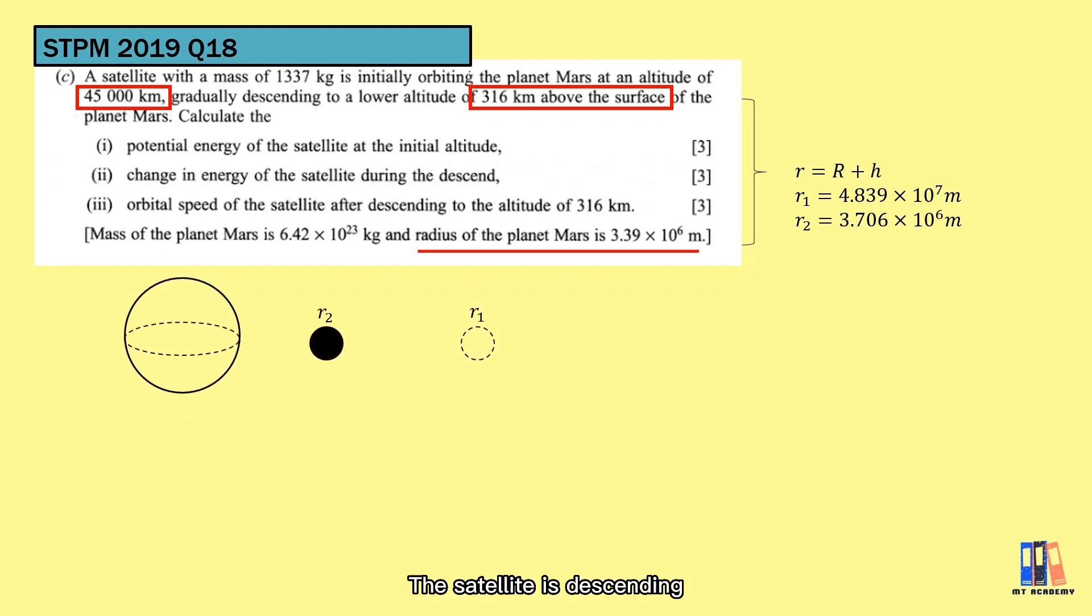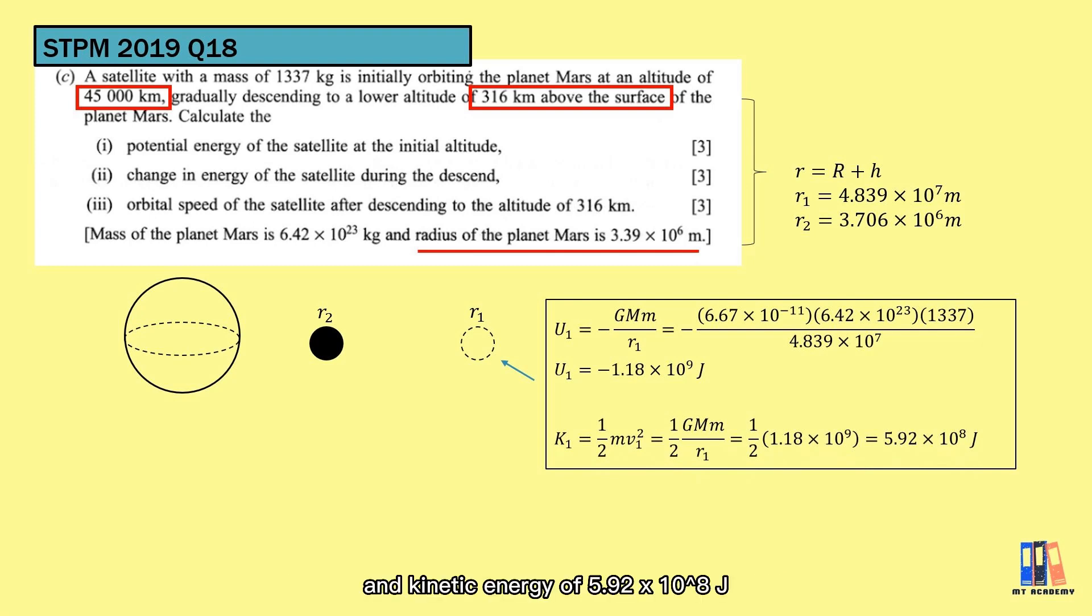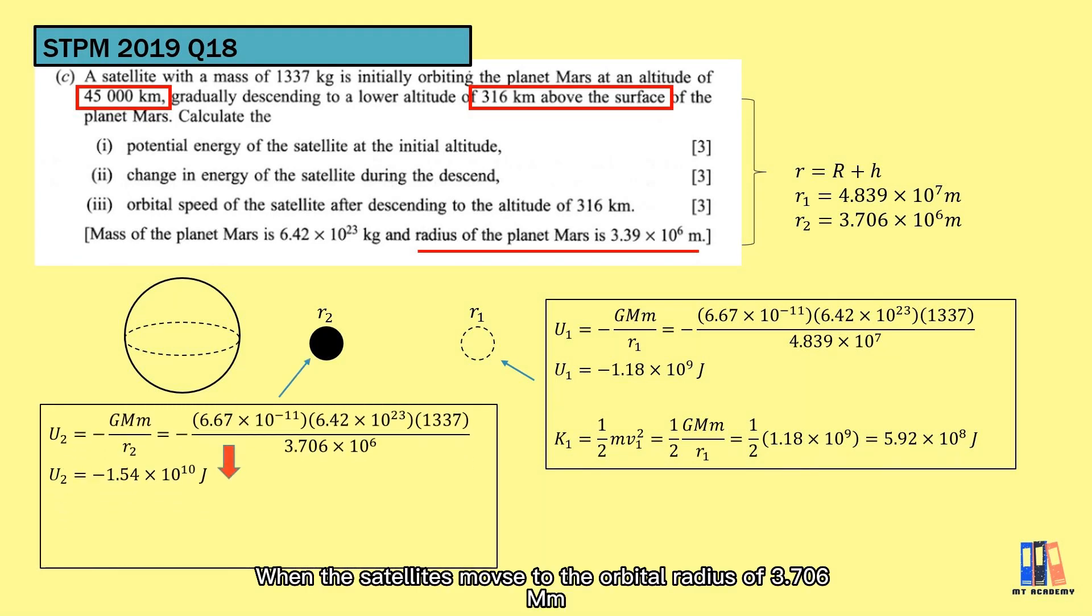So, the satellite is descending which means it is moving nearer to the mass. Let's calculate the potential and the kinetic energy. Refer to the initial position, the satellite has potential energy of negative 1.18 × 10⁹ joules and kinetic energy of 5.92 × 10⁸ joules. When the satellite moves to the orbital radius of 3.7 m, the potential energy has decreased to negative 1.54 × 10¹⁰ joules. The reason behind has been explained before this. The work to move the satellite nearer to the planet is actually negative, and it caused the loss of potential energy.